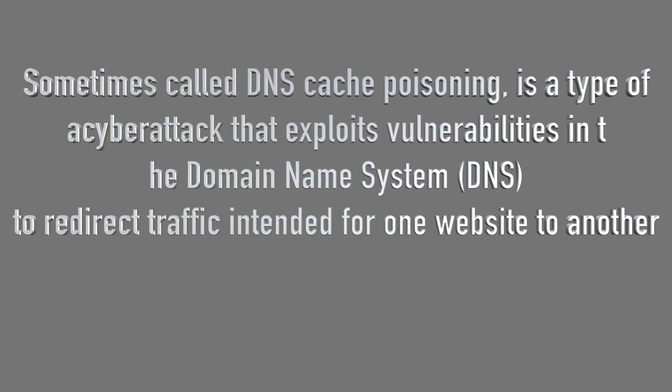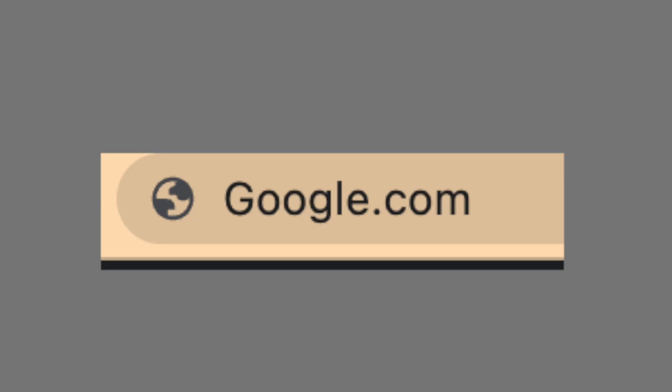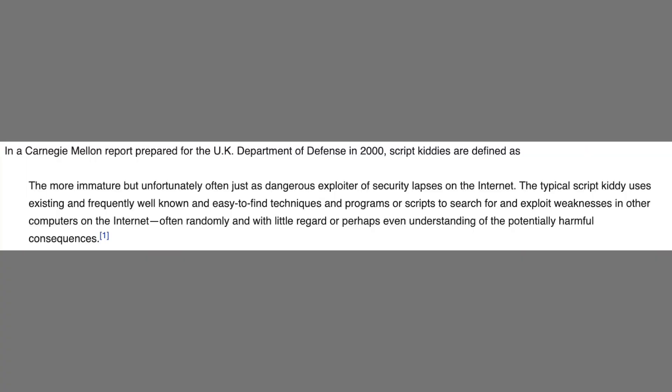The next common network attack is DNS spoofing, also called DNS cache poisoning. This exploits vulnerabilities in DNS to redirect traffic intended for one website to another. DNS is what allows you to type google.com instead of a numerical IP address. DNS spoofing is important because it can redirect you to a fake version of your bank's website, capture your login credentials, and then access your real bank account. It can also launch phishing campaigns and denial of service attacks. It's relatively sophisticated and can be extremely difficult to defend against.